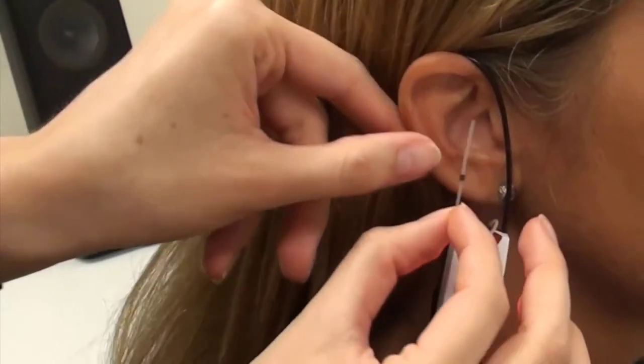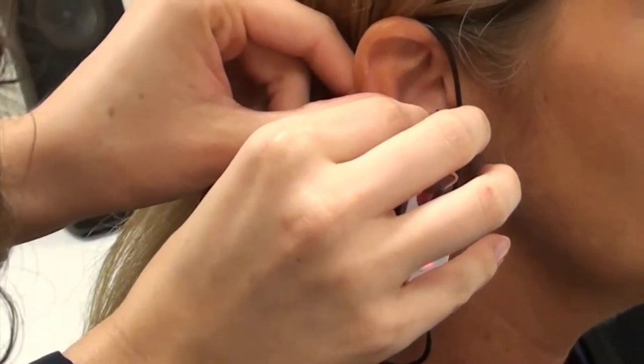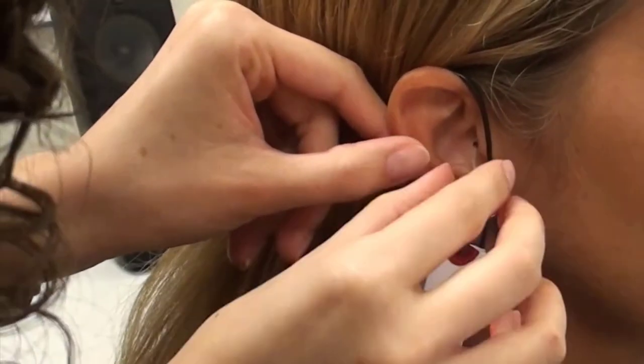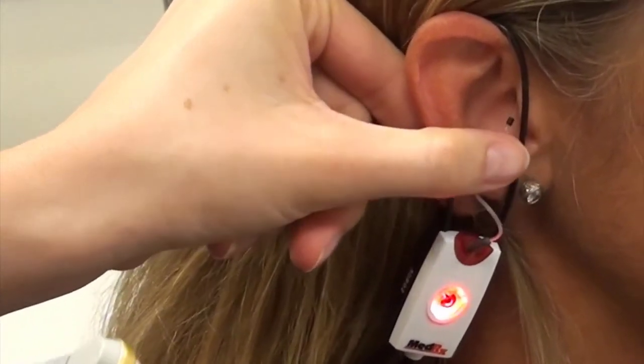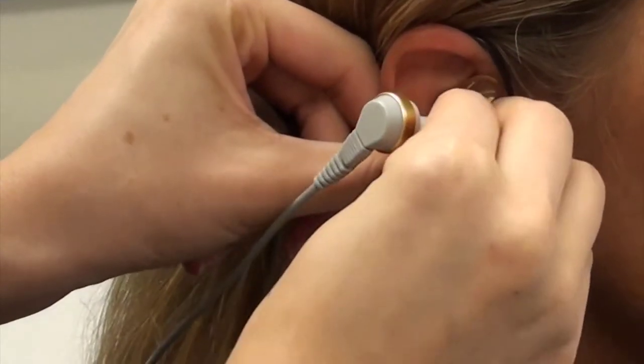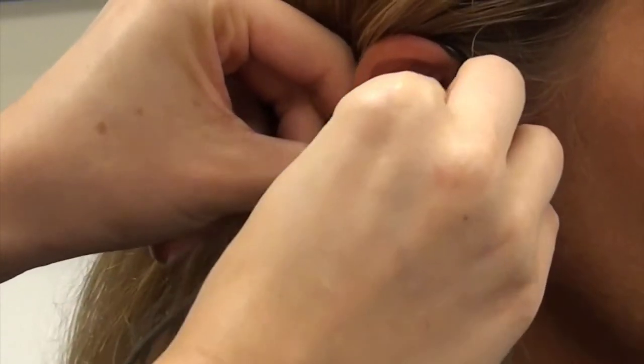Place the probe microphone tube as for all real ear measurements. Next, place the ear mold with the button receiver attached into the ear.